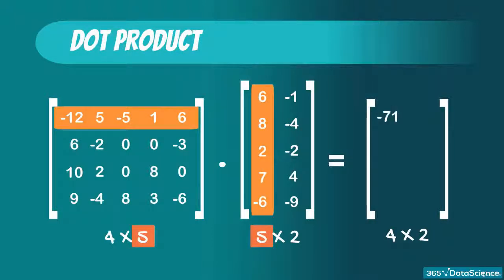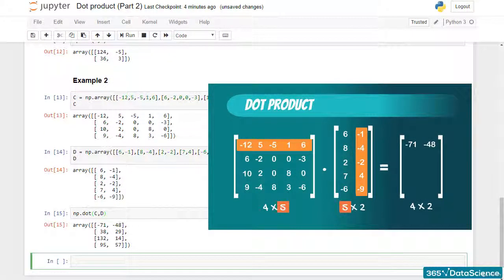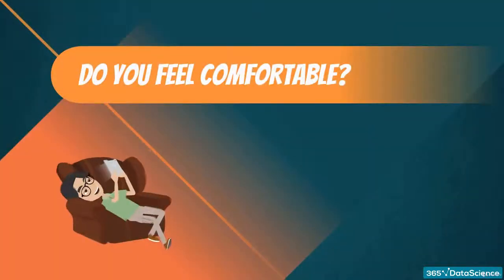Next, we multiply the first row vector with the second column vector. We get minus 48. We continue in the known way until we fill the product matrix. Linear algebra doesn't seem that hard after all. Do you feel comfortable? Let's do one more.